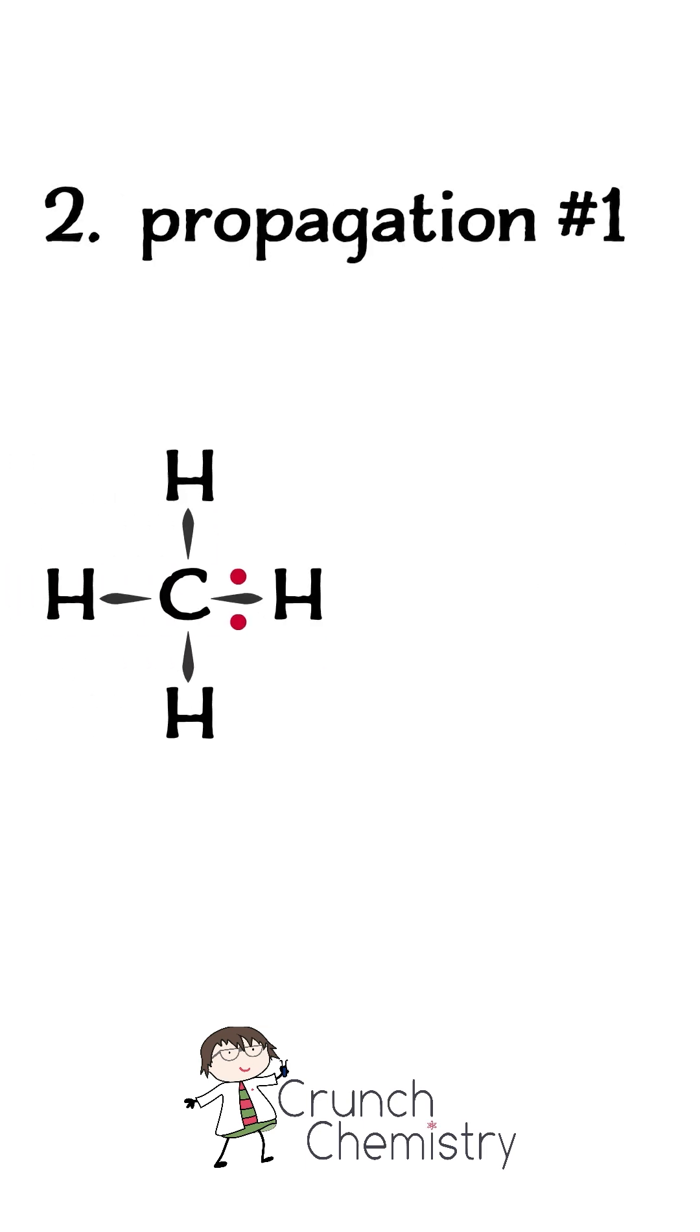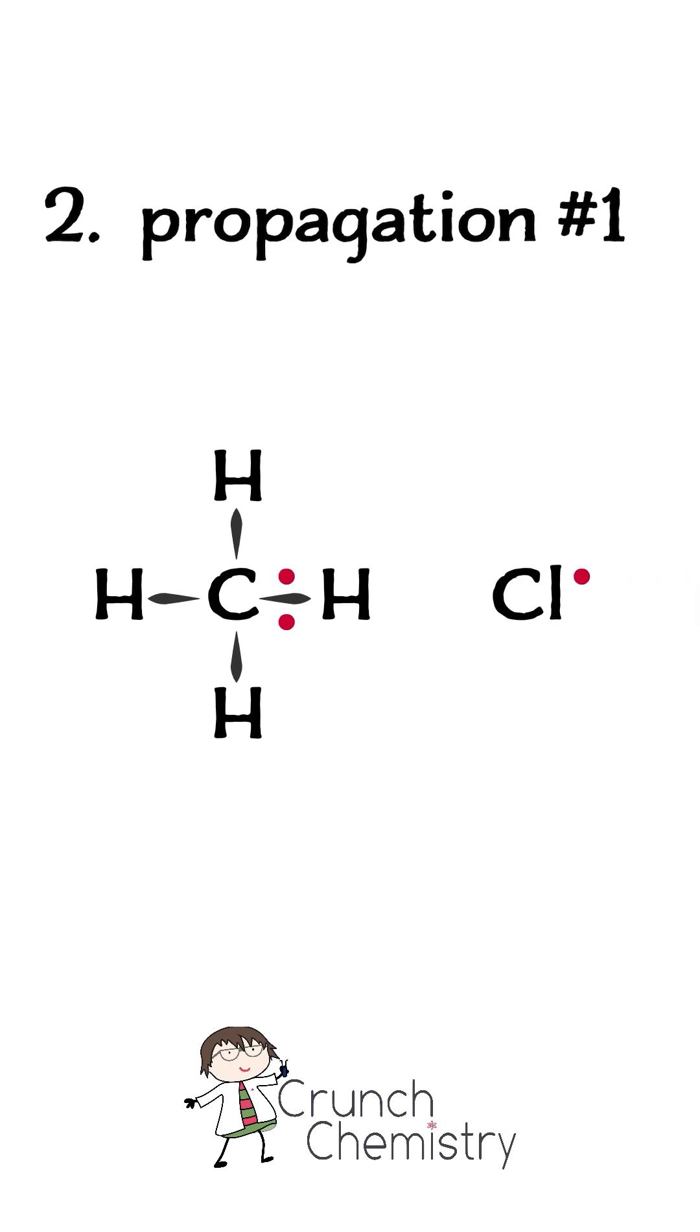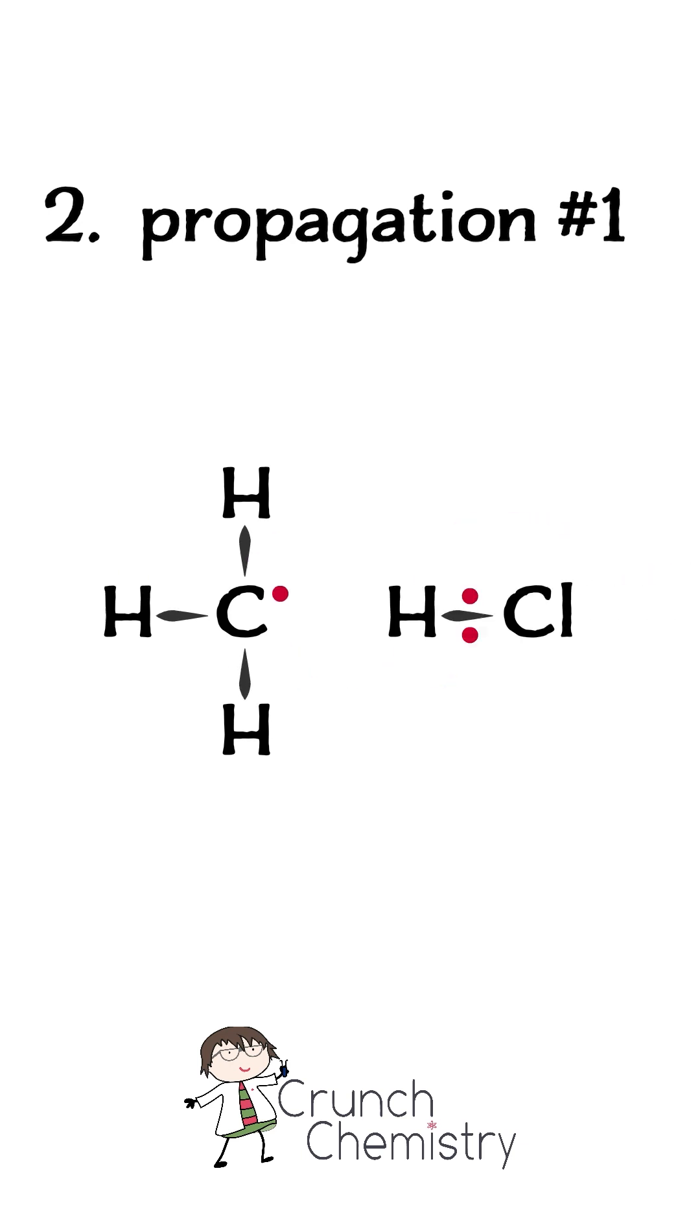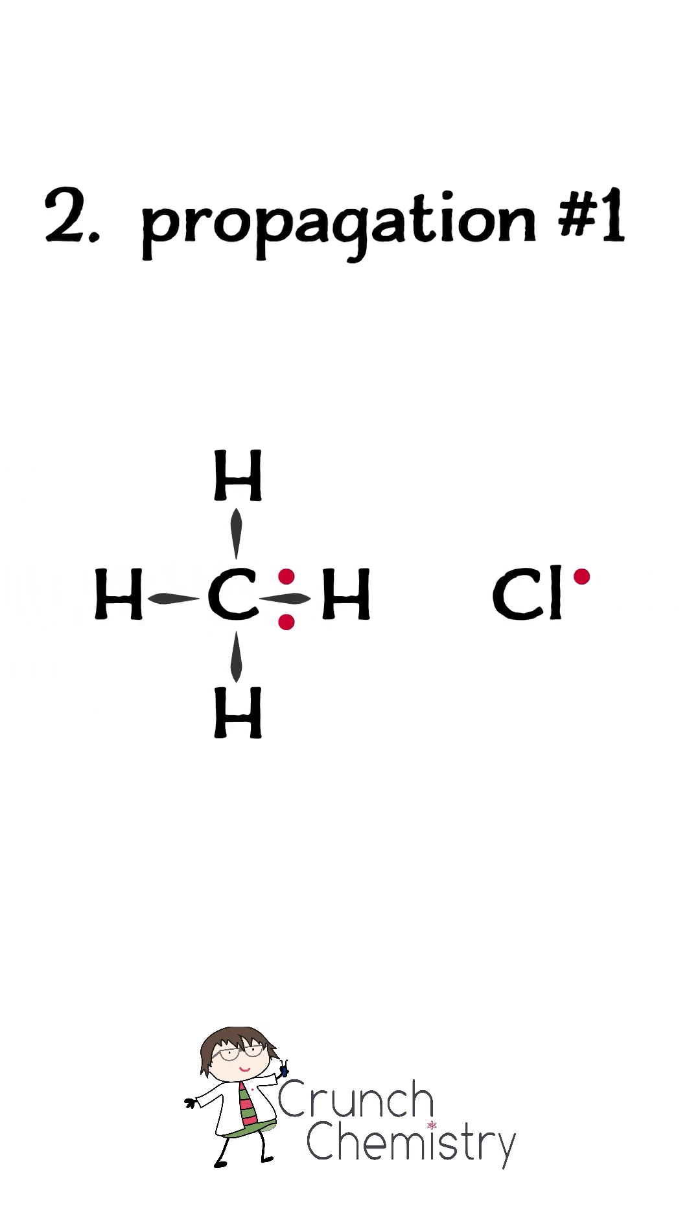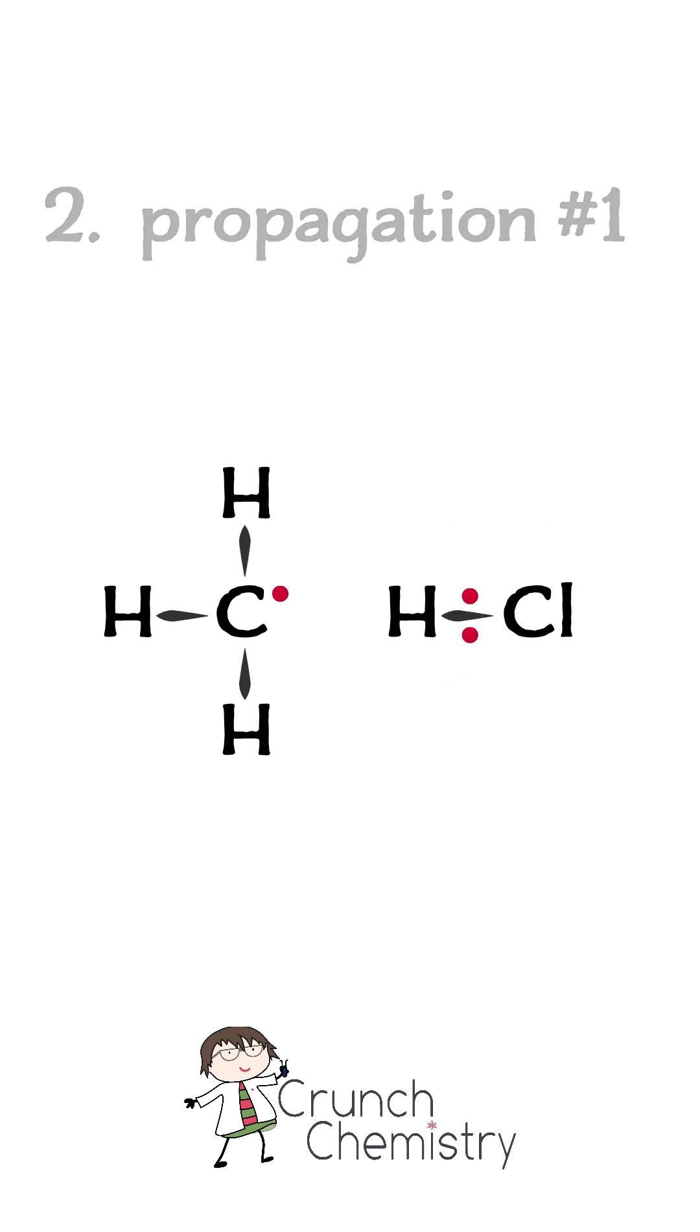The second stage is propagation, and there are two propagation steps, both of which produce a radical. Firstly, a chlorine radical abstracts a hydrogen atom from the alkane, forming a methyl radical. One electron from the new HCl bond is coming from the CH bond, and one is the unpaired electron on the chlorine radical.